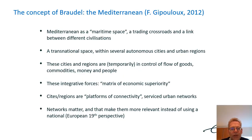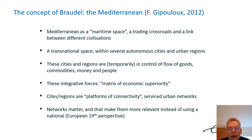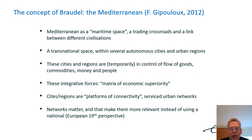So this is one of the major points addressed. Braudel's Mediterranean is a maritime space, a trading crossroads, and a link between different civilizations — a transnational space, meaning there are several autonomous cities and urban regions. It's important that when you look from a transnational perspective, you are aware that the national context, which has influenced our historiography since the early 19th century, is not the best criterion in order to study these transnational developments. We have to look at autonomous cities and urban regions, which are temporarily in control of the flow of goods, commodities, money, and people.